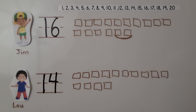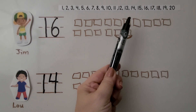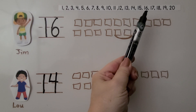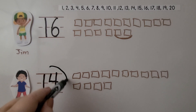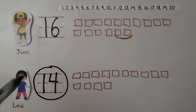So who has fewer cherries? Which set has fewer? We need to circle the number that is less. Remember, the lesser number comes first in counting order. When we look at the counting order, here's 14 and here's 16. 14 comes first, so 14 is the lesser number — it's fewer. Lou has fewer cherries than Jim. 14 is less than 16.